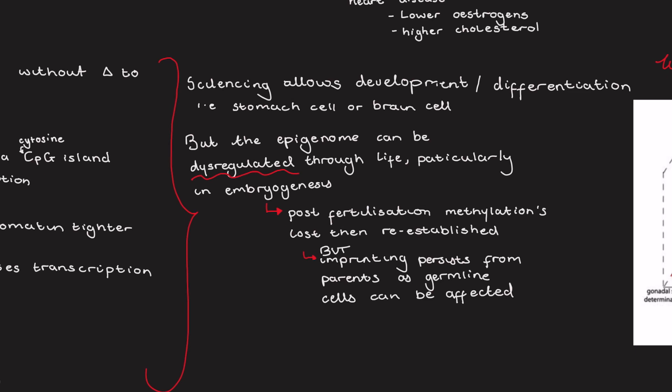However, it is susceptible to dysregulation throughout life and it's very susceptible and vulnerable during embryogenesis. Following fertilization, most methylation patterns are actually erased and then re-established, but imprinting persists throughout the methylation profile of a parent of origin.